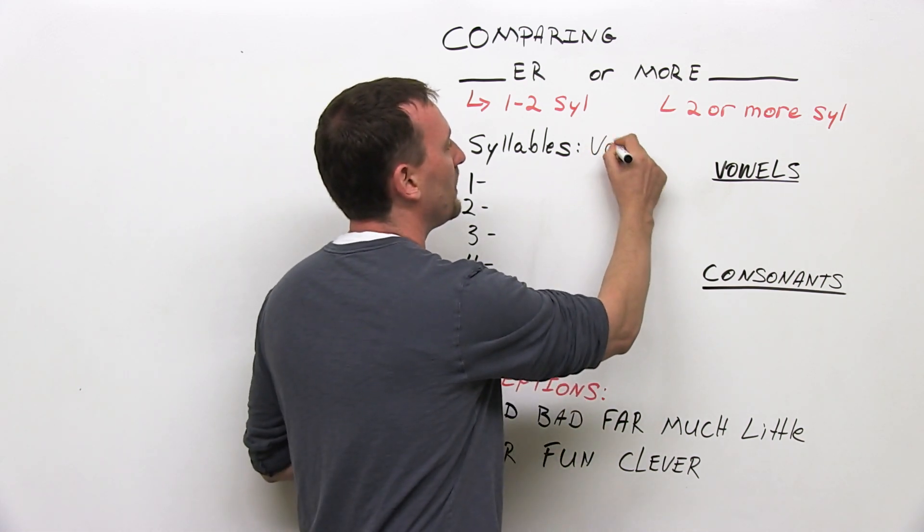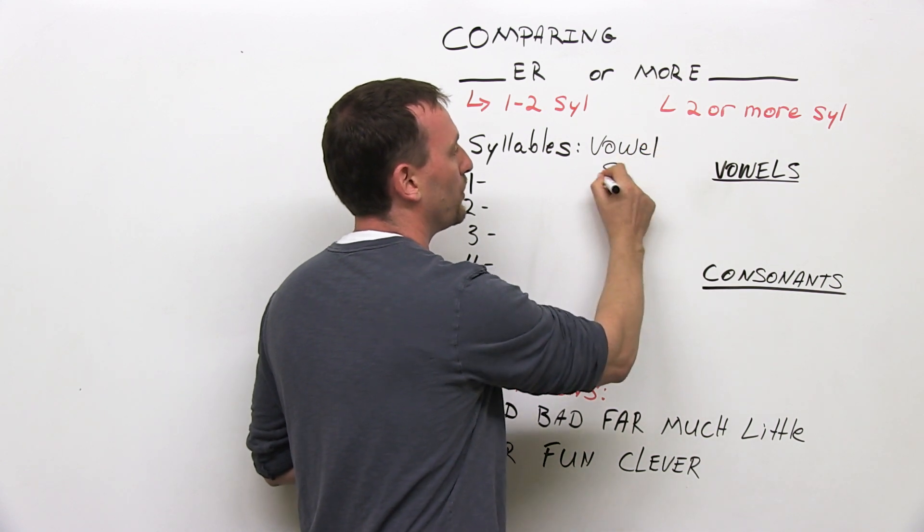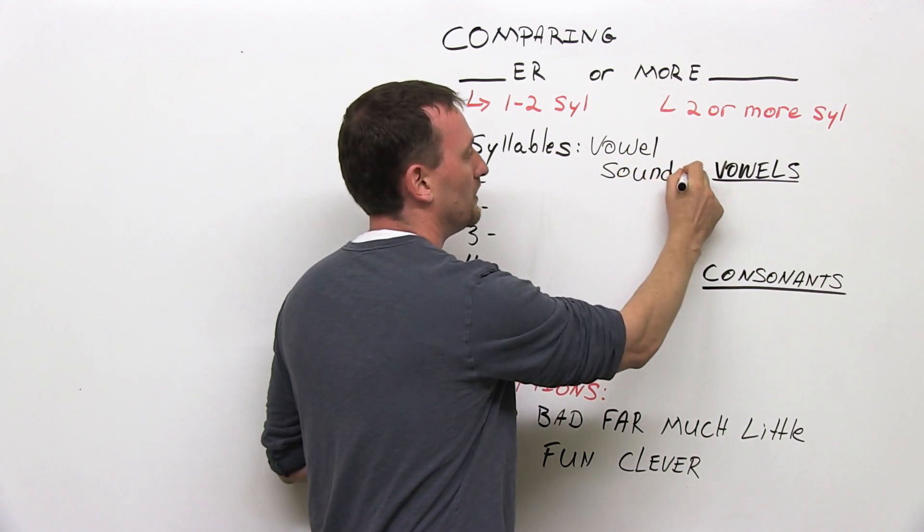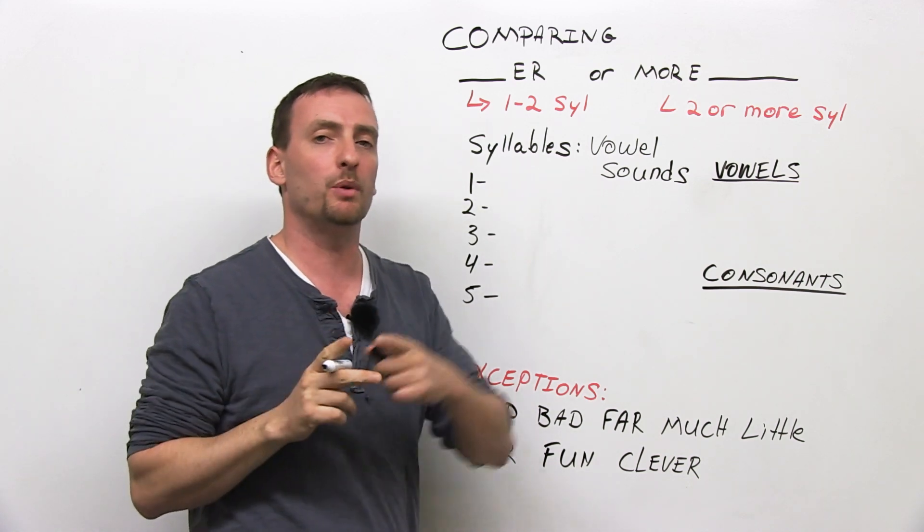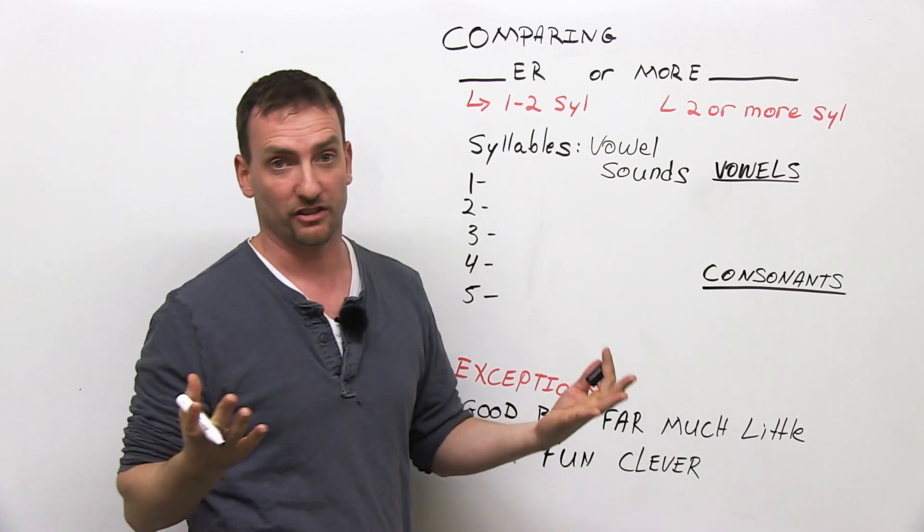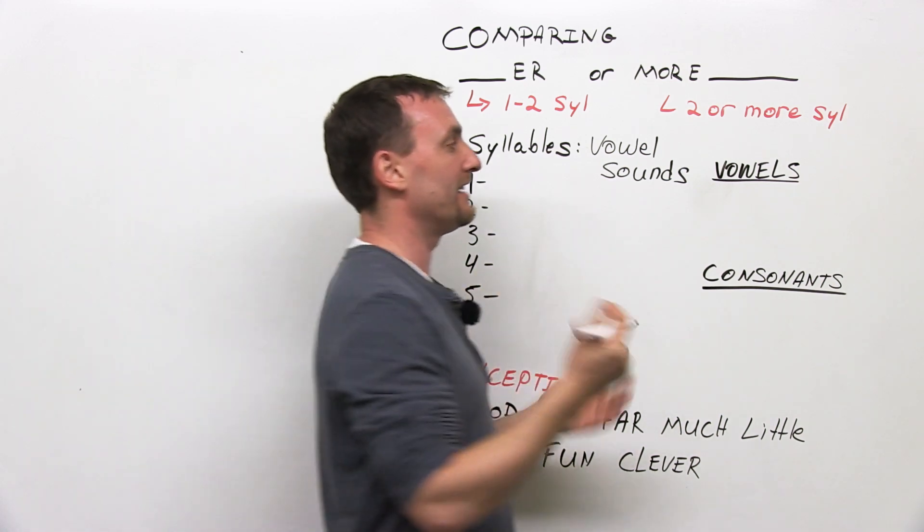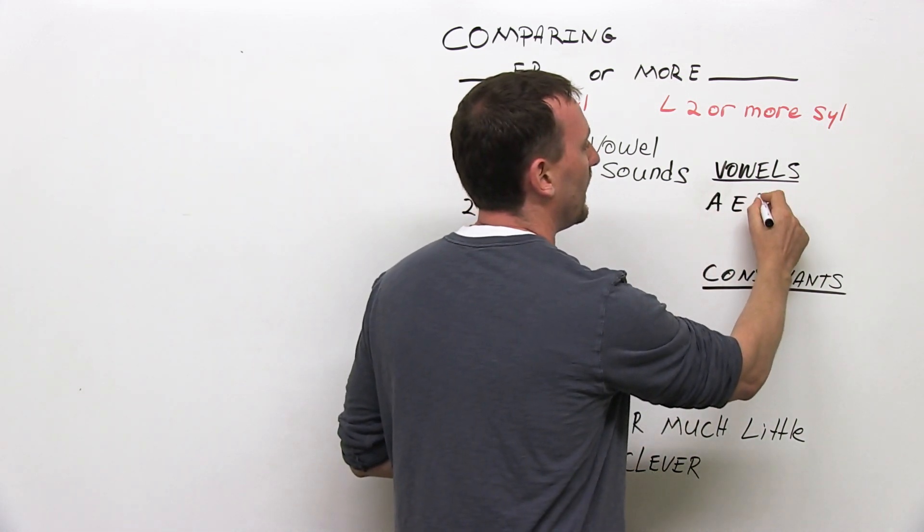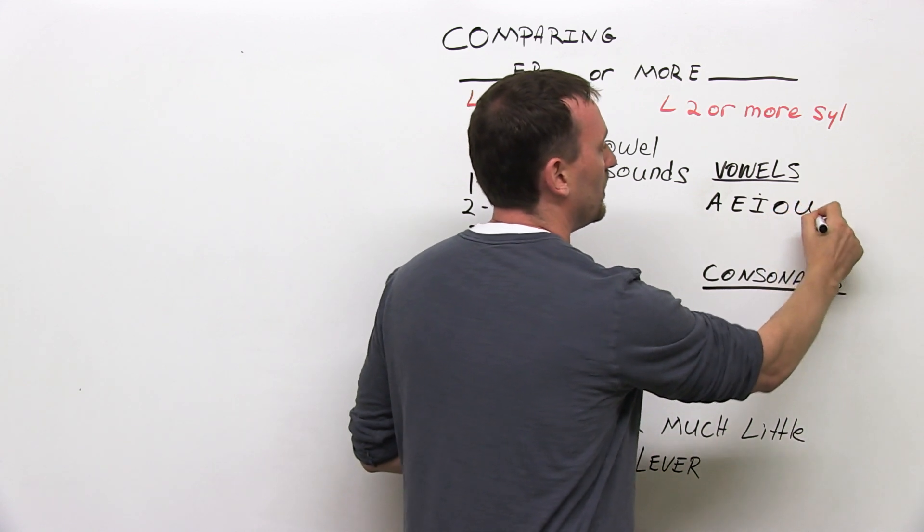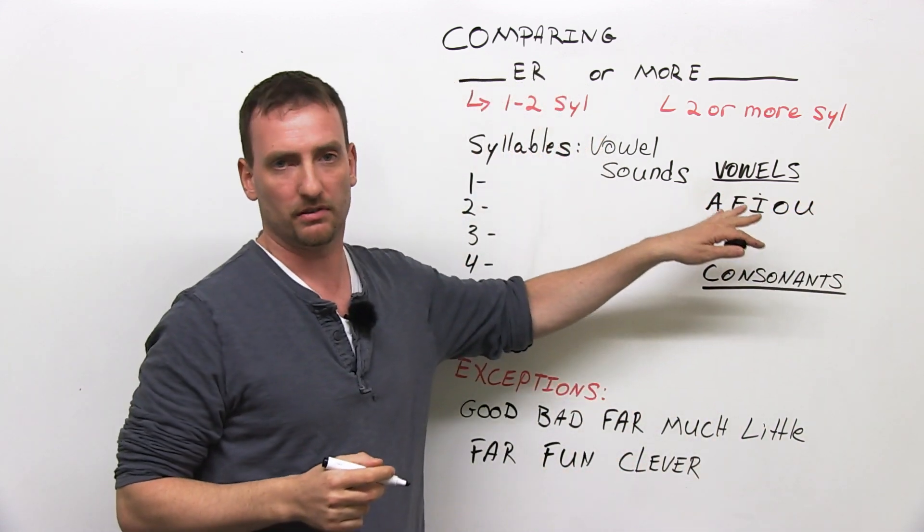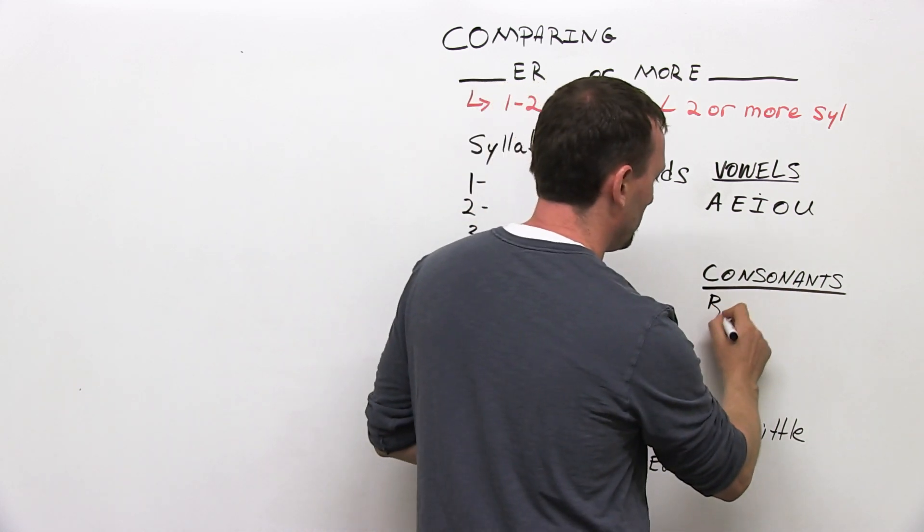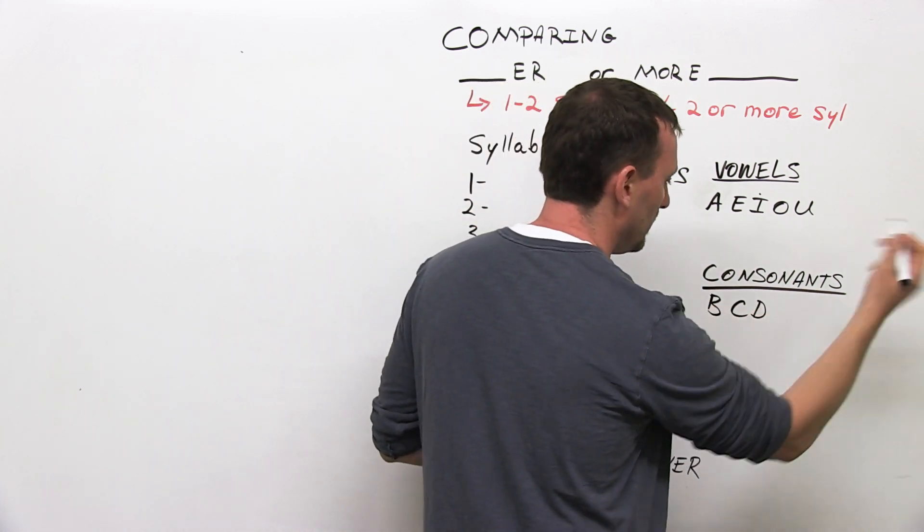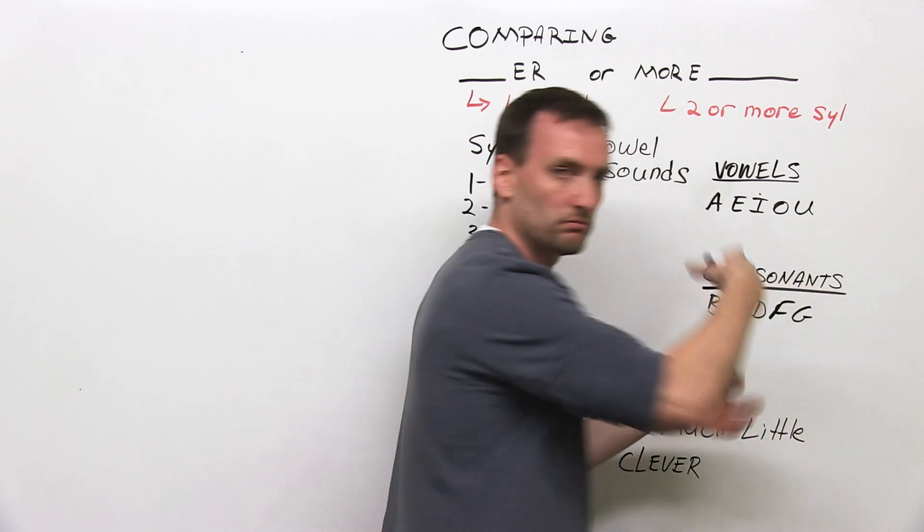Syllables are vowel sounds in a word. They're not the number of vowels, they're the number of vowel sounds. But first, what is a vowel? Just in case you're not familiar. A, E, I, O, U. These are the vowels in English. Consonants are B, C, D, F, G, and so on.